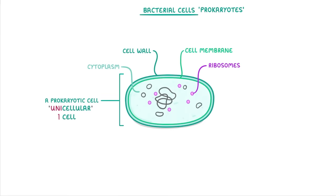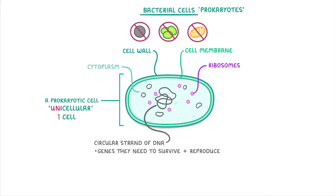Importantly though, they don't ever have mitochondria or chloroplasts. And they don't keep their genetic material in a nucleus. Instead, they have a single circular strand of DNA that's free to float around the cytoplasm, and that contains all the genes that they need to survive and reproduce.